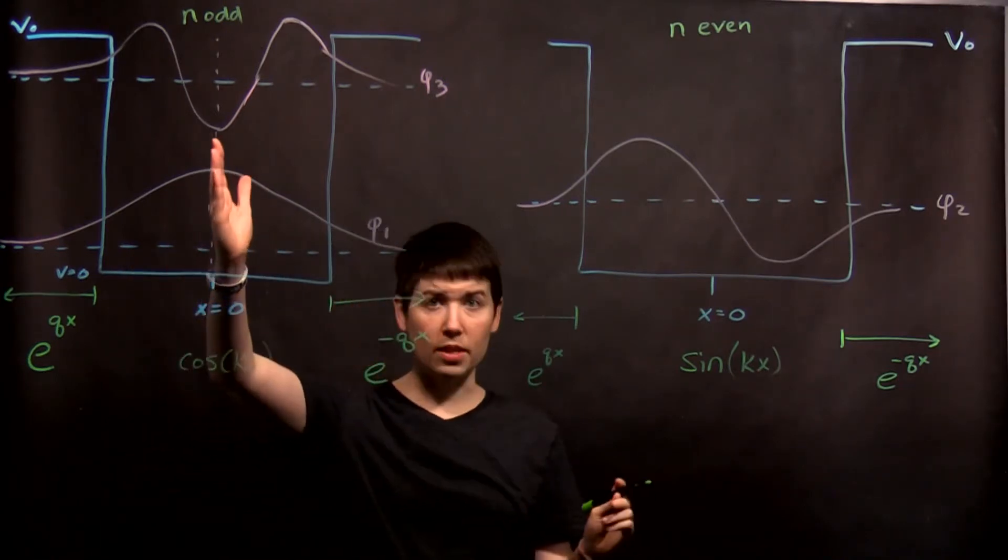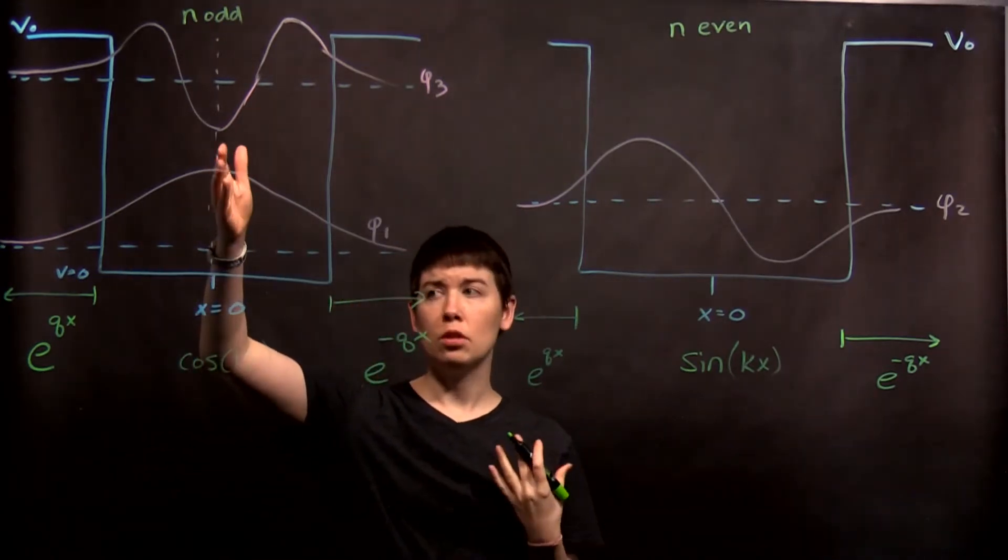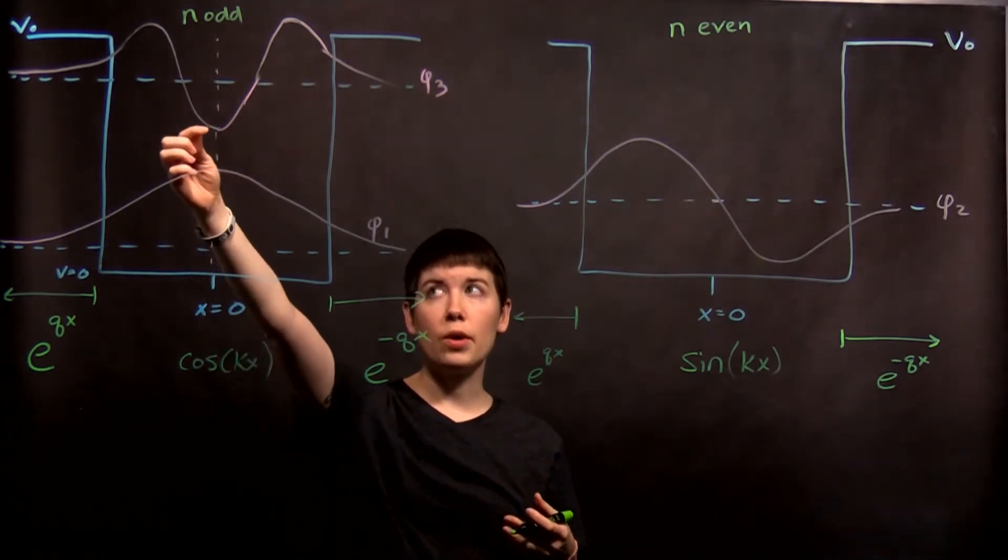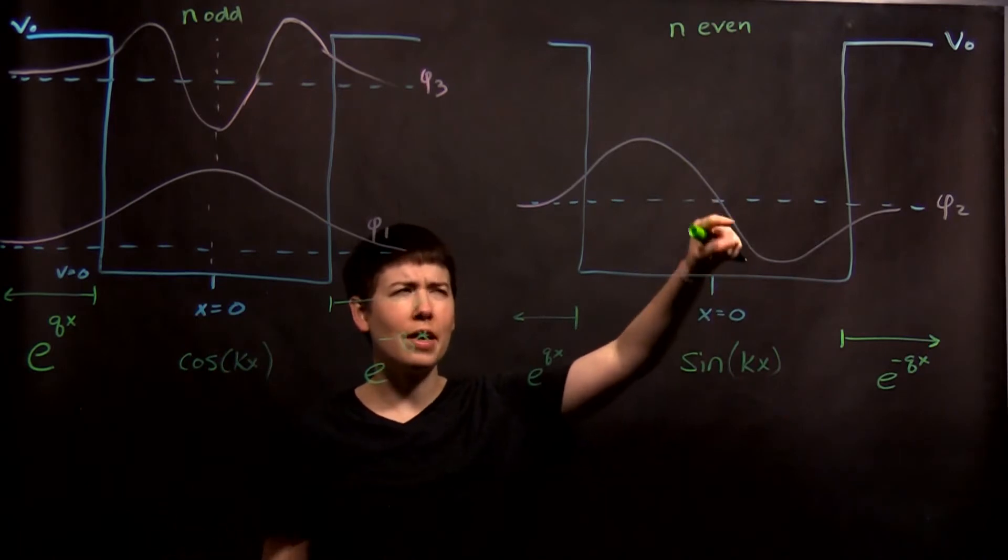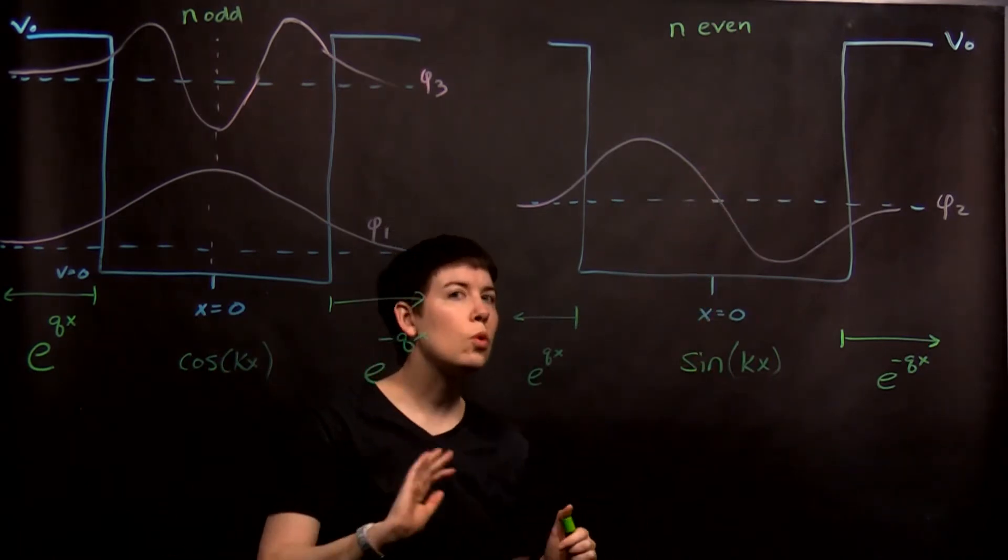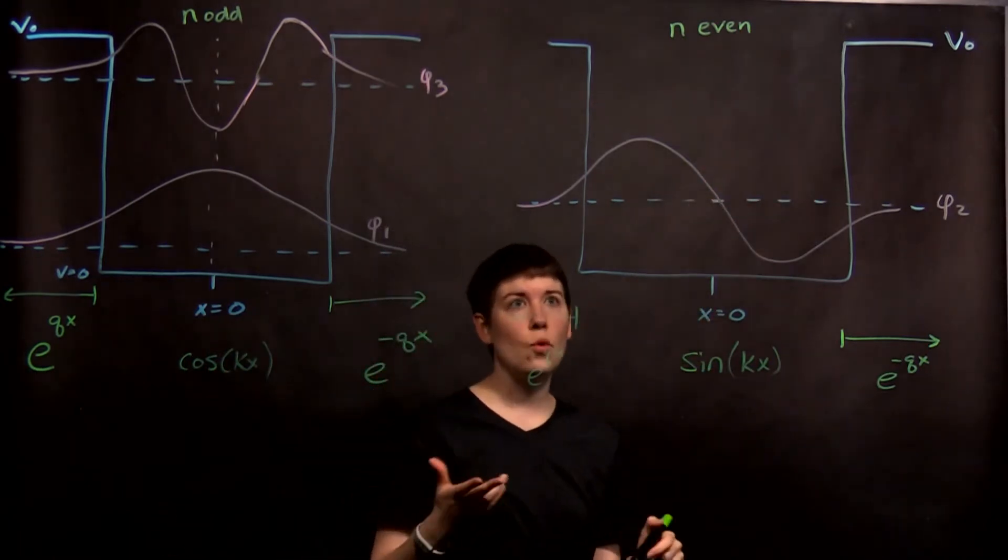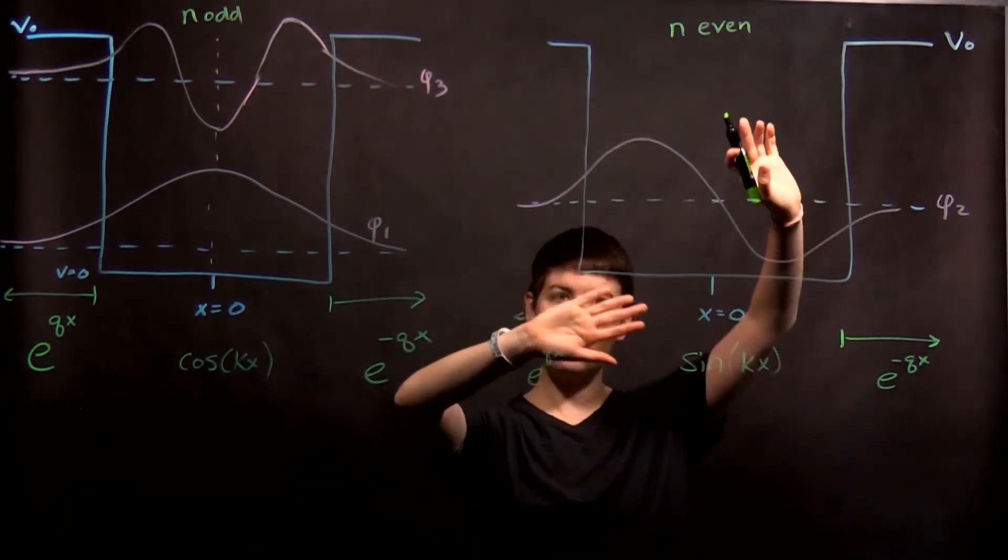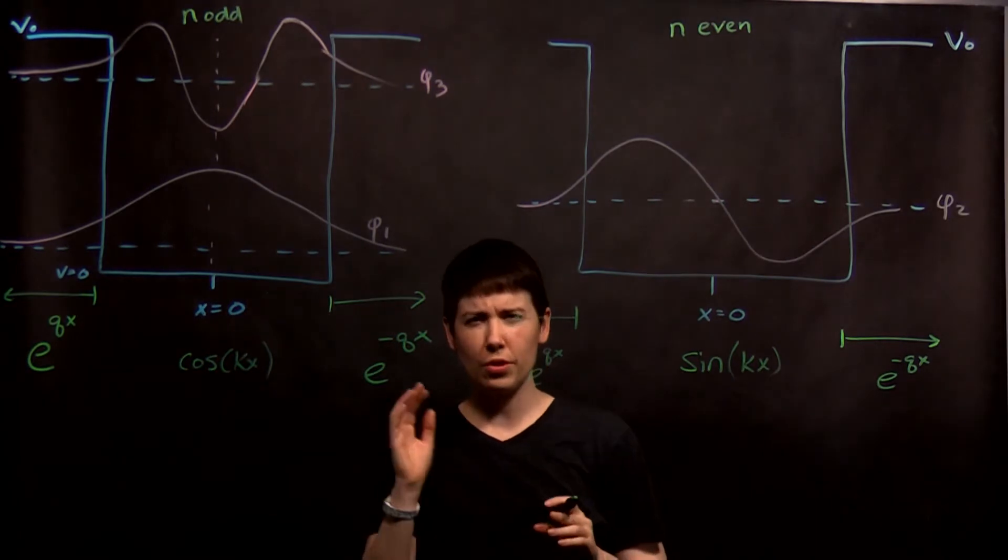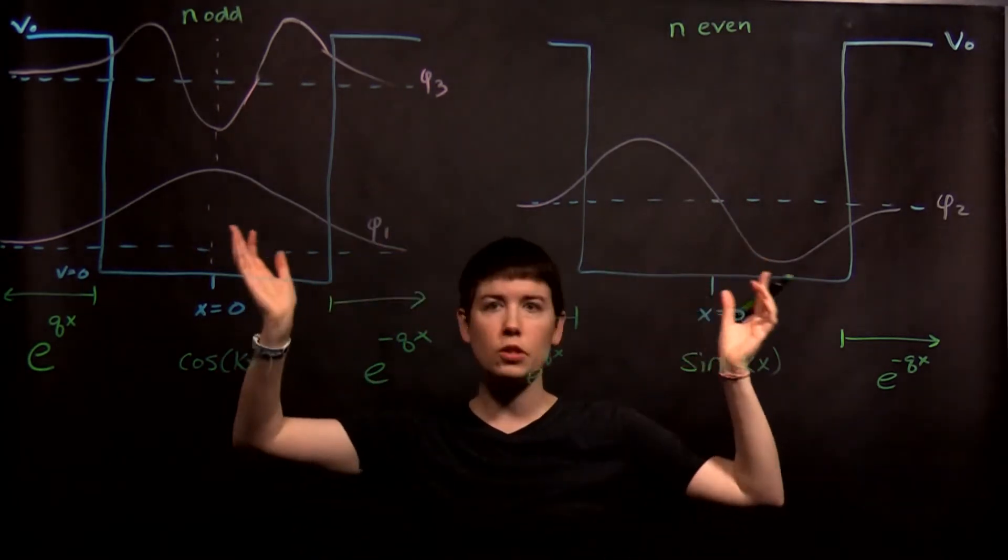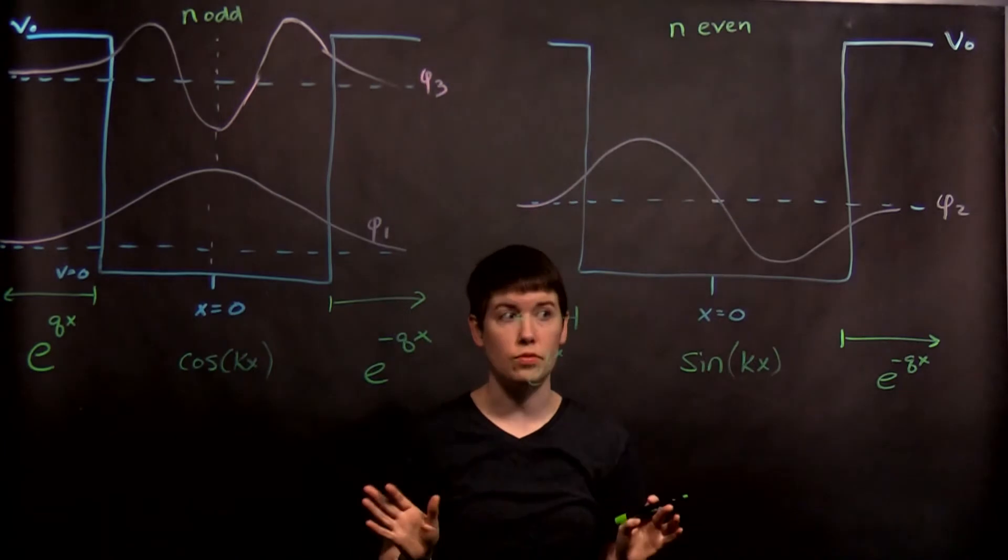And that should make sense, so cosine of zero is one. Now notice here that we have negative, we have positive. Here if I call this sine, well sine should go up. Don't worry about that for right now. We could have actually flipped this whole thing upside down, and that would still match the boundary conditions. So there's an overall phase. You can take your whole wave function and multiply it by negative one, and that makes no difference.